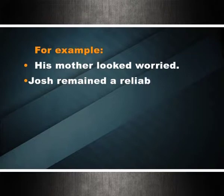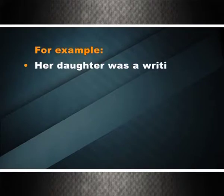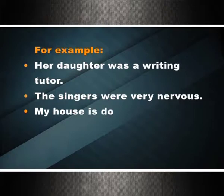Copular verbs are called linking verbs. They cannot be followed by an adverb or end a sentence alone, but must be followed by a noun or adjective. Common copular verbs include: be, seem, become, appear, look, and remain. Examples: his mother looked worried; Josh remained a reliable friend. The verb 'be' is manifested in eight forms: be, is, am, are, was, were, been, and being. These verbs precede nouns or adjectives that become predicate nouns or predicate adjectives. They can also be followed by an adverb of place. Examples: her daughter was a writing tutor; the singers were very nervous; my house is down the street.